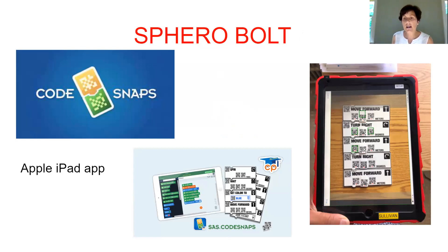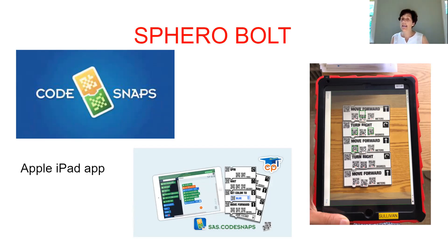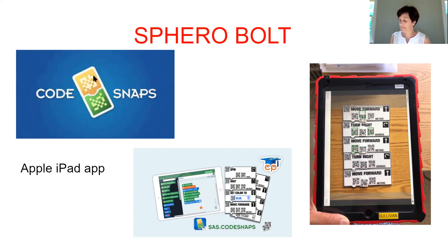Code Snaps is the app I use to make this accessible for our students. You can see on the right-hand side I created cards I printed from the website specifically for Sphero. My students without vision could build the commands — move forward however many meters, turn however many degrees, move forward, turn right, move forward — and then a student with low vision or I would enter it into the app. Don't be afraid; just have fun with the kids.